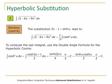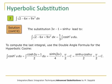To compute this last integral, we use the double-angle formula for the hyperbolic cosine: cosh²(u) = (cosh(2u) + 1)/2. So the integral of cosh²(u) du equals the integral of (cosh(2u) + 1)/2 du, which gives sinh(2u)/4 + u/2 + C. Since sinh(2u) = 2 sinh(u) cosh(u), we have sinh(2u)/4 = sinh(u)cosh(u)/2, and the answer includes + u/2 + C.